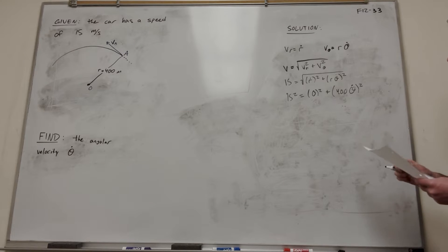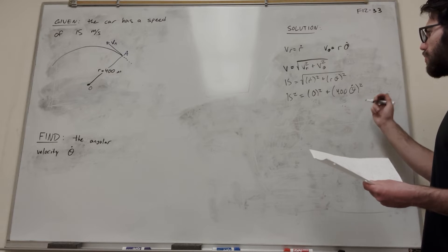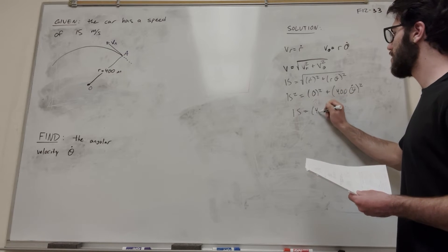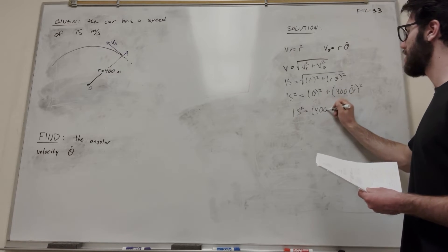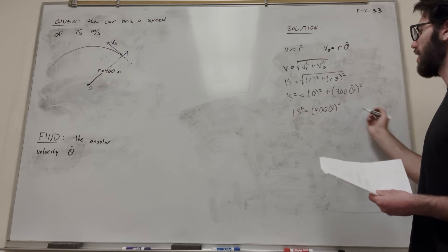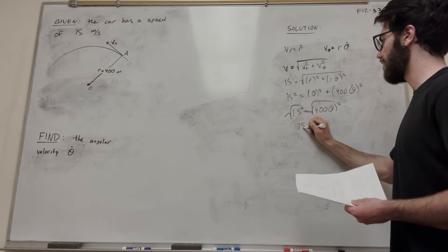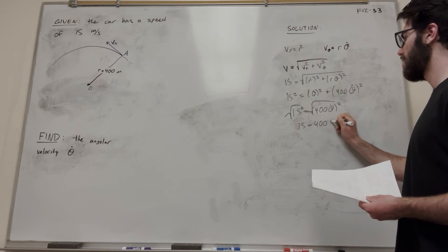So now we're here. How are we going to solve this? Well, let's simplify this. We have 15 squared is equal to 400 theta dot squared. We can just go ahead and take the square root of both sides, and then we get 15 is equal to 400 theta dot.